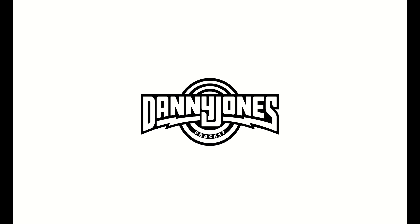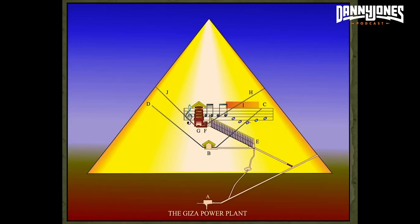Number A is the subterranean chamber, which is picking up vibrations deep within the earth. That is transmitting vibrations up those shafts — there are two shafts: one that goes out of the pyramid to the right, and one that goes up into the grand gallery, and then through the grand gallery into the king's chamber.